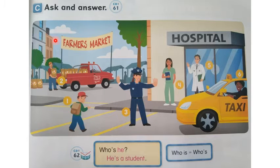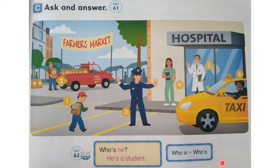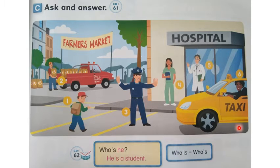Today we're going to be practising 'who's he' and 'who's she.' 'Who's' is a quick way of saying 'who is.' Who is he? Who is she? Instead of 'who is' we can say 'who's.'